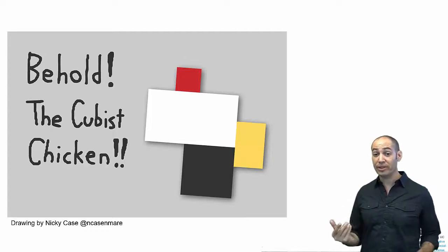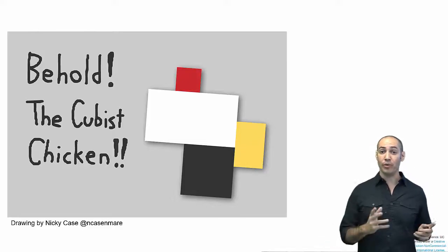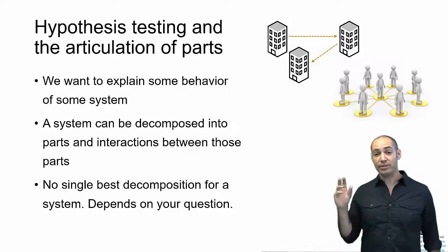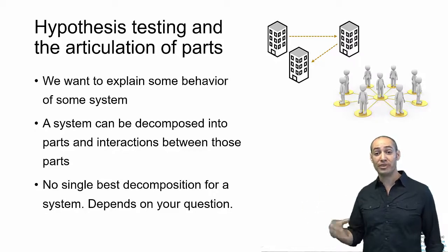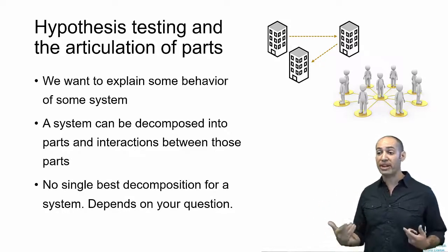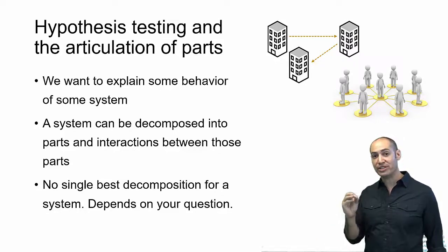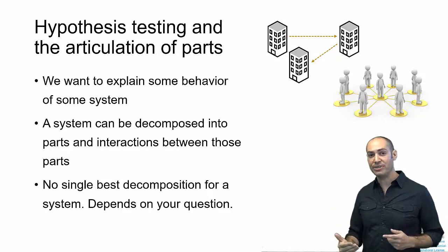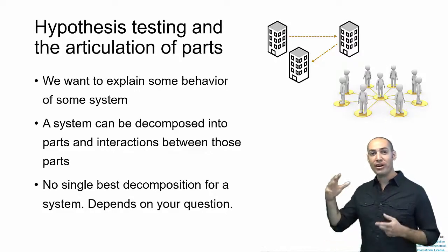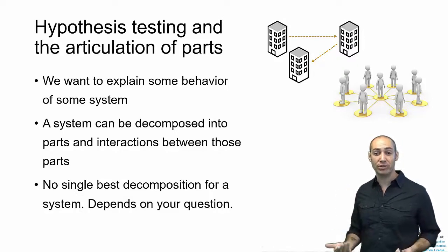When we're trying to understand the world and create explanations, those explanations are based on a breakdown of any system into parts and relationships between those parts. This is central to any kind of hypothesis testing and any kind of science we do. What we want to do is explain some behavior of some system, and so that system can be decomposed into parts and interactions between those parts. Now an important thing to realize is that there is no single best decomposition of a system into parts or relationships. Depending on the question, how we articulate the parts of the system and the interactions will come out of what kind of explanation we're looking for.